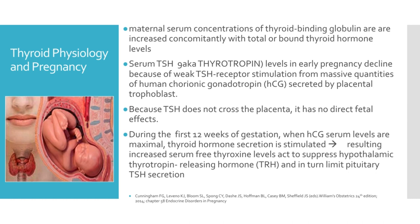During the first 12 weeks of gestation, when HCG serum levels are maximal, thyroid hormone secretion is stimulated. The resulting increased serum thyroxine levels act to suppress hypothalamic thyrotropin-releasing hormone and in turn limit pituitary TSH secretion. Accordingly, TRH is undetectable in maternal serum. Conversely, beginning at mid-pregnancy, TRH becomes detectable in fetal serum, but levels are static and do not increase with advancing gestation.